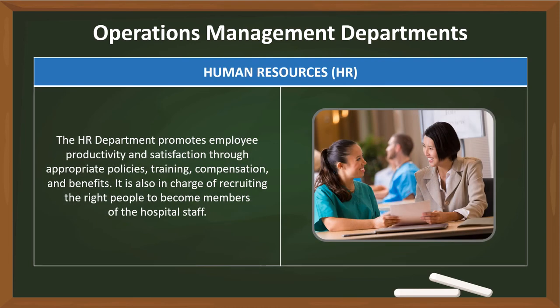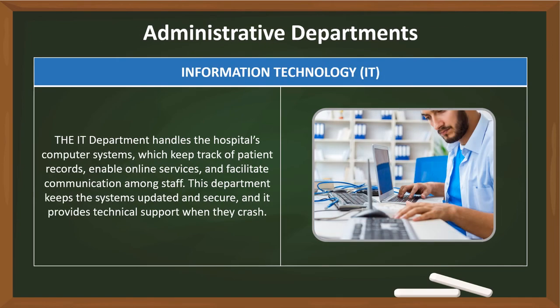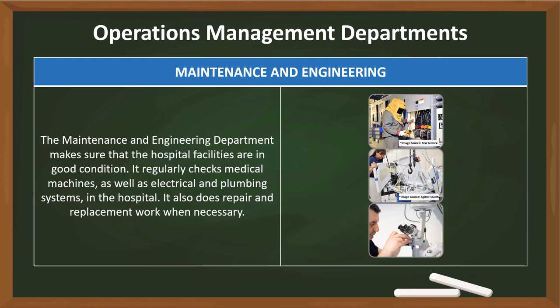The Human Resources, or HR, department promotes employee productivity and satisfaction through appropriate policies, training, compensation, and benefits. It is also in charge of recruiting the right people to become members of the hospital's staff. The Information Technology, or IT, department handles the hospital's computer systems, which keep track of patient records, enable online services, and facilitate communication among staff. This department keeps the systems updated and secure, and it provides technical support when they crash. The maintenance and engineering department makes sure that the hospital facilities are in good condition. It regularly checks medical machines, as well as electrical and plumbing systems, in the hospital. It also does repair and replacement work when necessary.